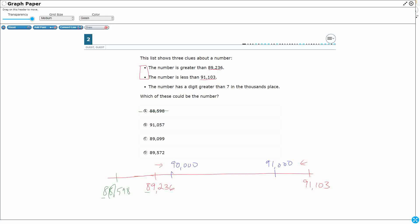So let's look at this 91,057. Okay, 91, see, here's my 91,000, here's my 91,103. So that's going to fit. I'm going to put this 91,057. See, this 1 in the hundreds is greater than the 0 in the hundreds. So we're good there.